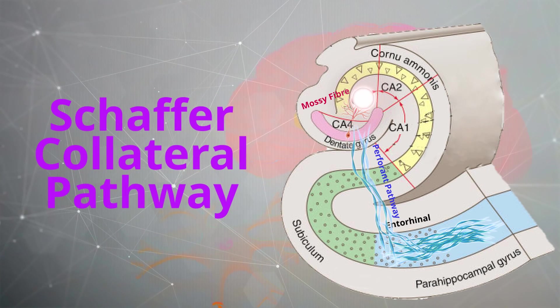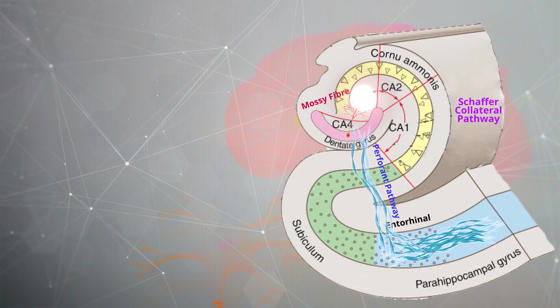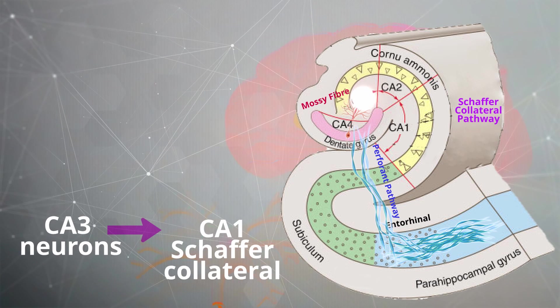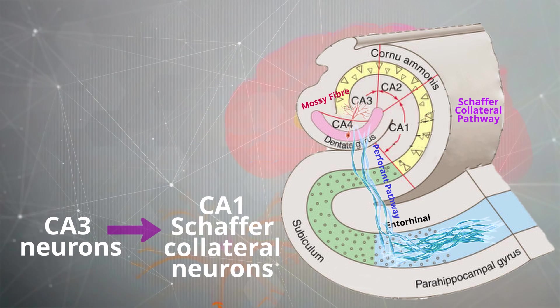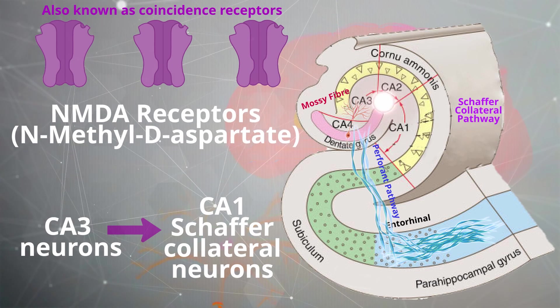Then the Schaffer collateral pathway, which is the third pathway completing the trisynaptic circuit, will connect the CA3 neurons to the CA1 Schaffer collateral neurons, where it has the highest concentration of NMDA receptors within the brain.